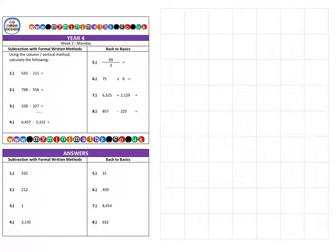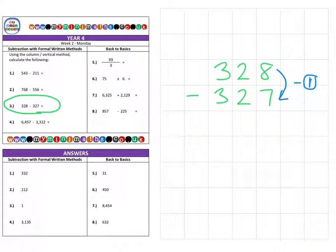Next is question three, which is 328 subtract 327. As soon as you see this question, I'm quite sure you've realized they are very close together. We can clearly see that we've subtracted just one to get from the 8 to the 7, so the difference between these two numbers is just a single unit.